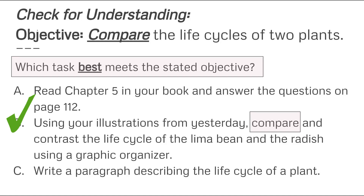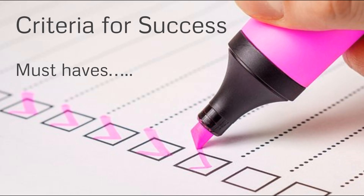The textbook questions may offer good questions, but if they're not focused on comparing two life cycles, then the students will not have the opportunity to engage or refine the thinking required to be successful on that assessment. Writing a paragraph describing the life cycle does not take the task to the level of thinking or cognitive complexity needed to master the objective. So the task that best fits the objective from this list is B: using your illustrations from yesterday, compare and contrast the life cycle of the lima bean and the radish using a graphic organizer.